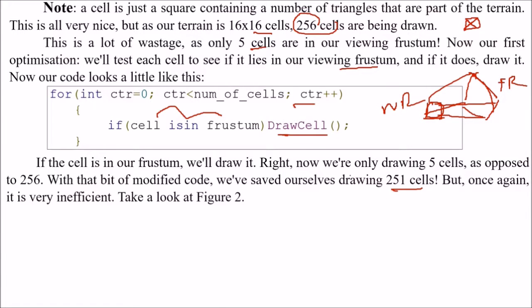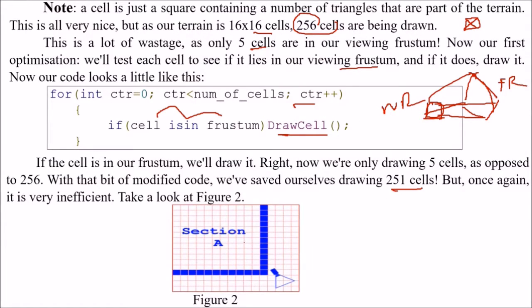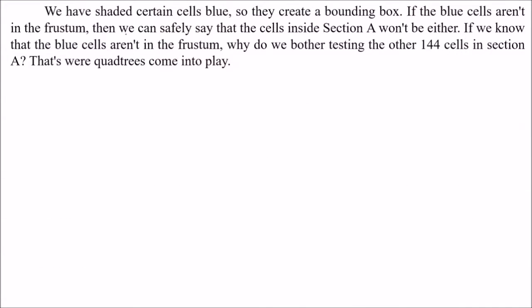But once again, is it inefficient? We have shaded certain cells in blue — they create a bounding box. If the blue cells are not in the frustum, then we can safely say that the cells inside section A won't be either. So if you know that the blue cells aren't in the frustum, why do we bother testing the other 124 cells in section A? That means we are testing all 256 cells and checking every single one.